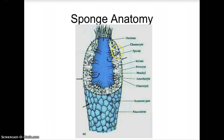Here you can see typical sponge anatomy. Here you have the choanocytes, or the collared cells. Here are the spicules, which make up the skeleton. You have the osculum, which is the larger opening at the top of the sponge for water to exit, and you have the small openings, which are incurrent pores called the ostia. And here's a typical amoebocyte cell, which helps play a role in digestion.